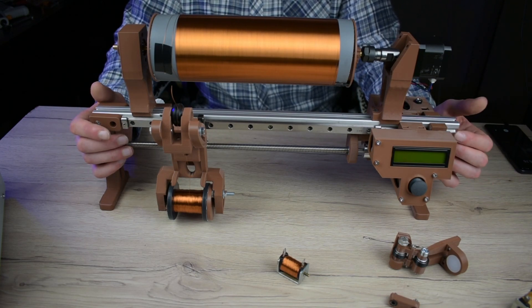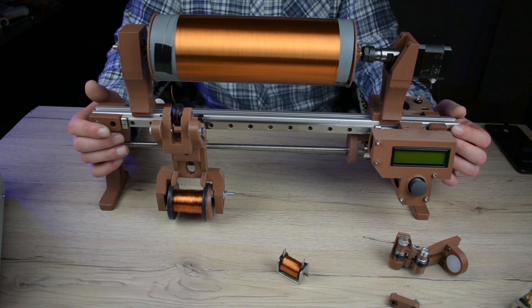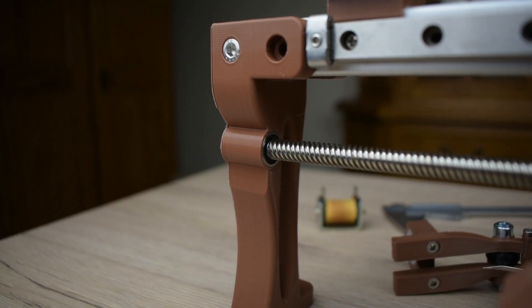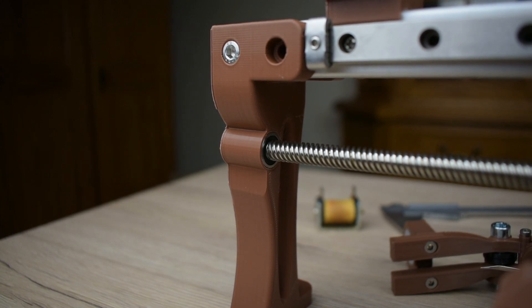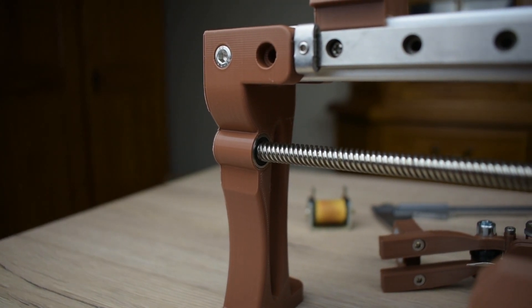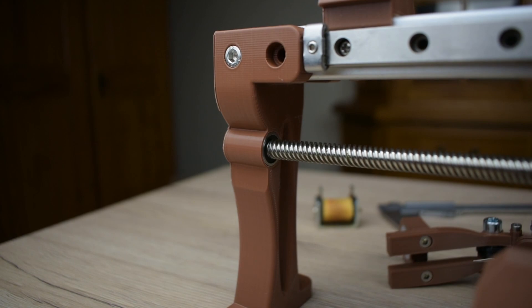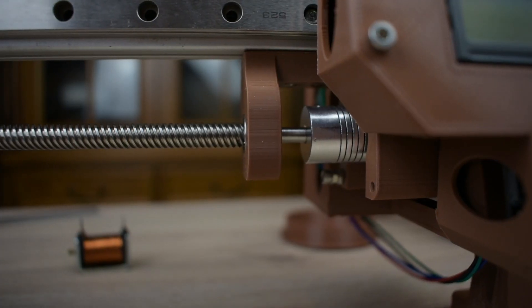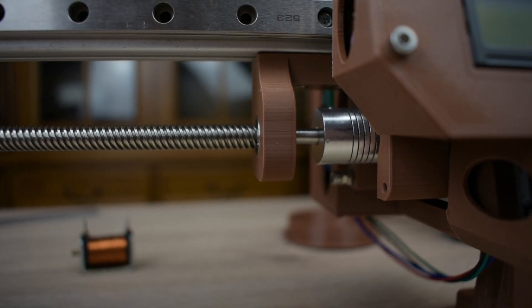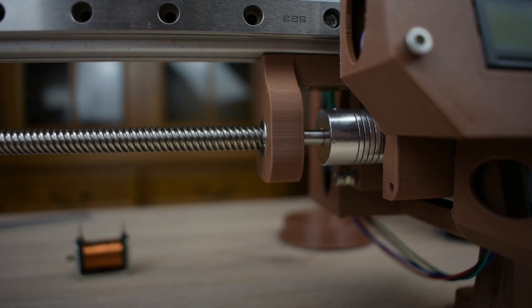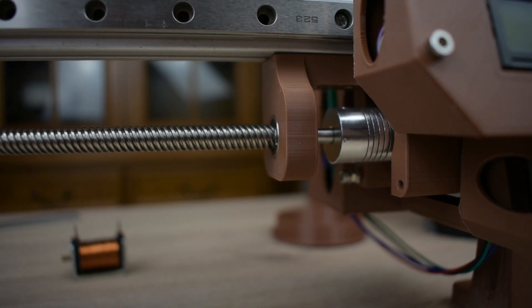So without further ado, let me show you some of the key features of it. Now a quick disclaimer. There is one part that needed machining and that is the ACME screw of the linear axis. Both ends need machining, so they sit properly in the bearings. And you need to figure out another way so the ACME screw is not loose between those bearings if you have no access to a lathe. But that's about all you need to know before you print it.